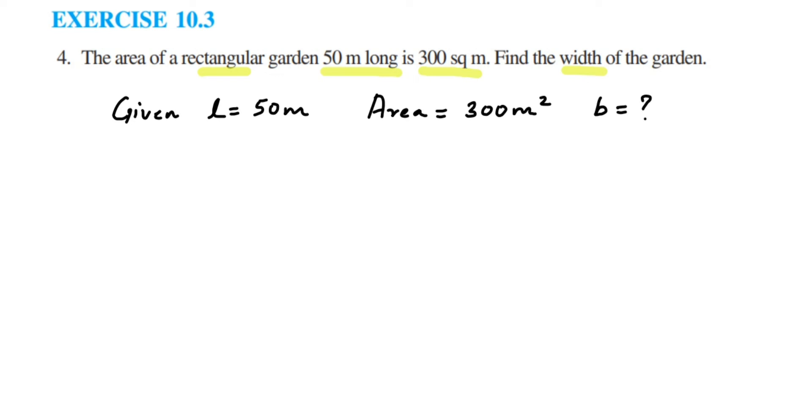Now we know the area of rectangle formula, which is length into breadth. So area of rectangular garden equals length into breadth. But we know the area, which is 300 square meters.